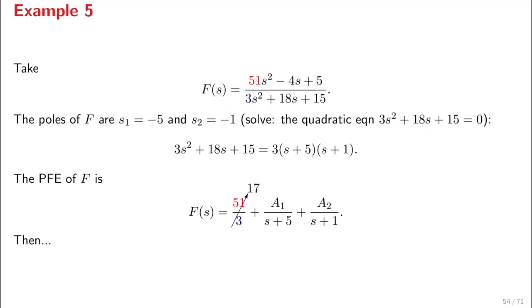So the highest order coefficients give rise to this constant term. Let's give an example. Take this F(s), which is a second-order polynomial divided by another second-order polynomial. We can see here that the poles of F are -5 and -1. You can easily solve the quadratic equation to do that. You can factorize: 3s² + 18s + 15 equals 3(s + 5)(s + 1).